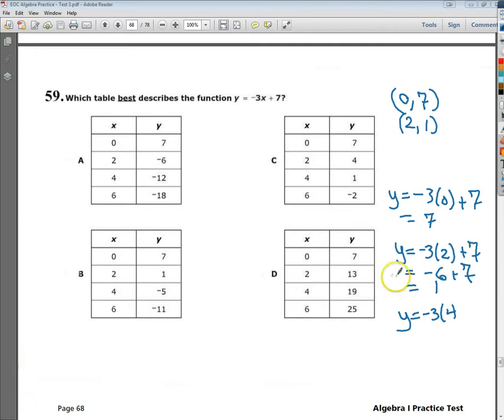Now, it's a 4 in every one of them, so be careful. When I plugged in a 4, I ended up getting a negative 5. I'm going to look for something that has these matches, and the only one that does is B.